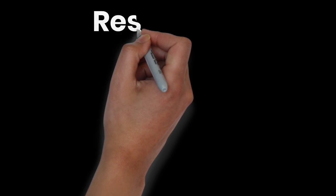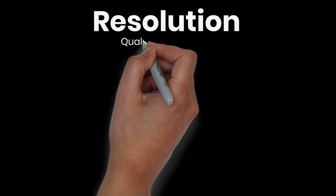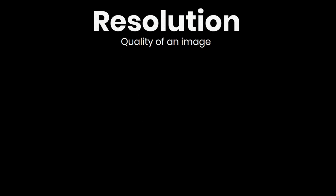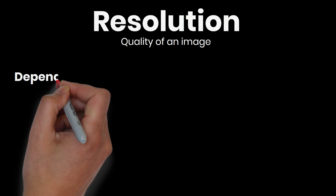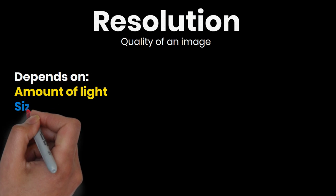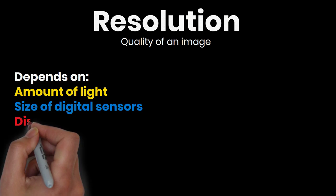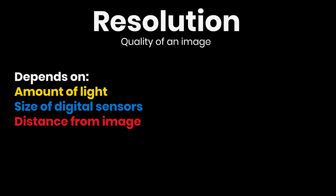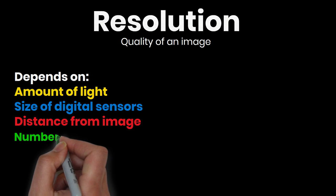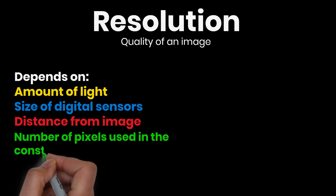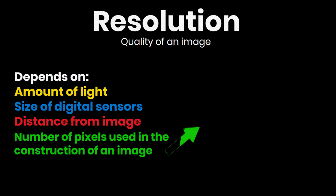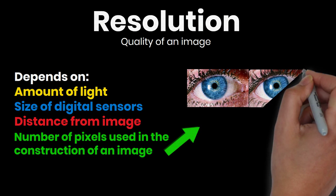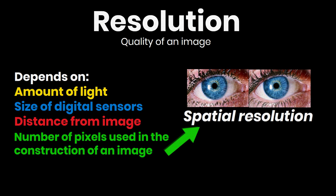Earlier, we mentioned the word resolution. What is it? It refers to the quality of an image, which is made up of pixels. It is used to describe the fine detail of the image and depends on the amount of light, the size of the digital sensors, and how far away one is when viewing it. Resolution is also determined by how many pixels are used in the construction of an image. This is called spatial resolution.